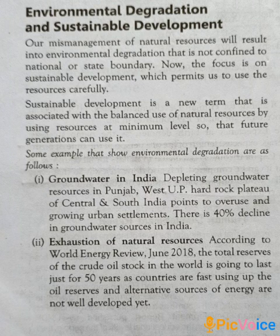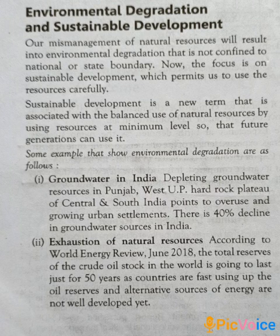Now let us see some examples of how environmental degradation is happening. The first point is depleting groundwater resources in Punjab, West UP, Hard Rock Plateau, Central and South India, which points to overuse and growing urban settlements. There is a 40% decline in groundwater sources in India.